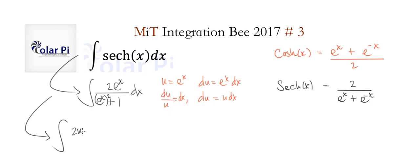What we're going to get is 2u divided by u squared plus 1, and then dx is du divided by u. When we replace dx, this u here is going to cancel that u there.